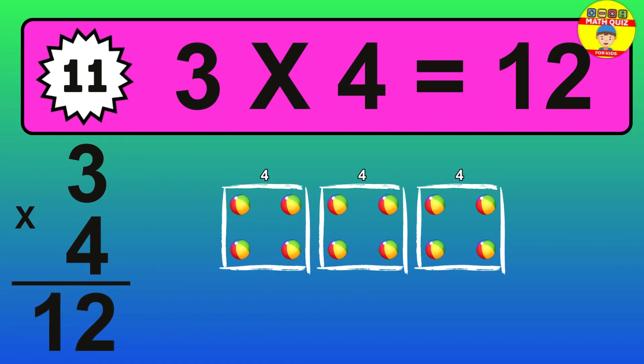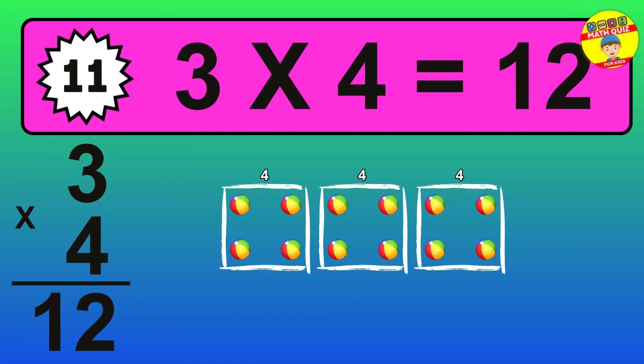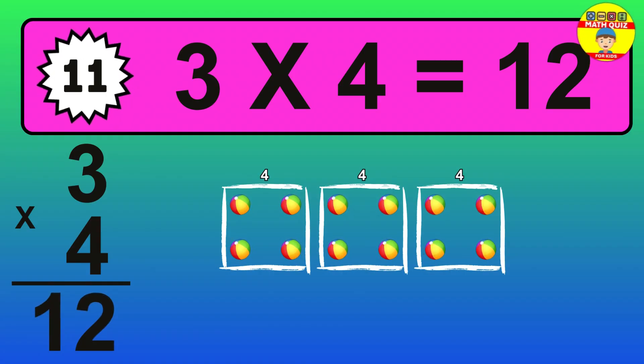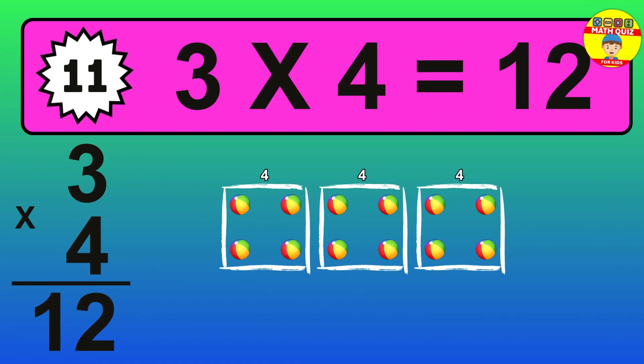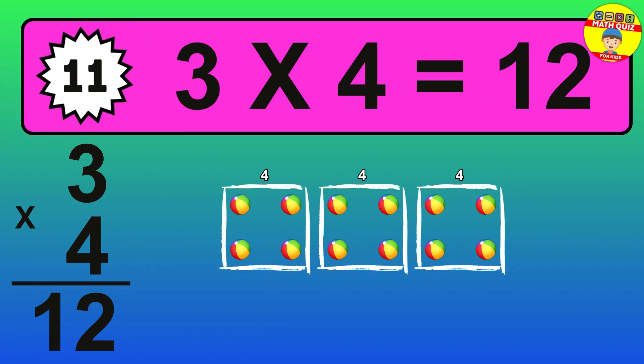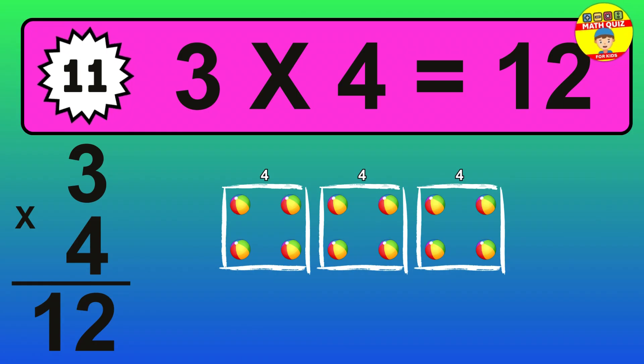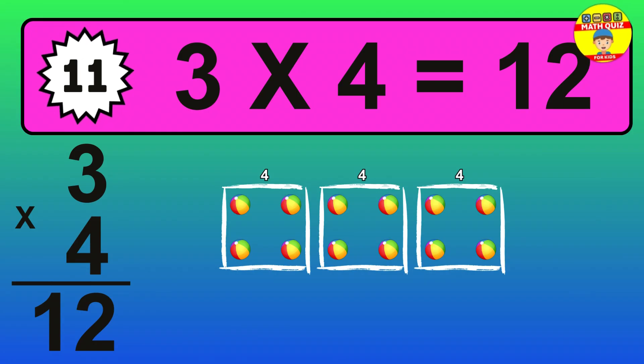The answer is 3 times 4 is 12. To calculate, we have 3 groups with 4 balls each one. So how many balls do we have?